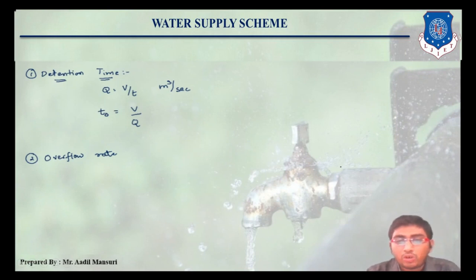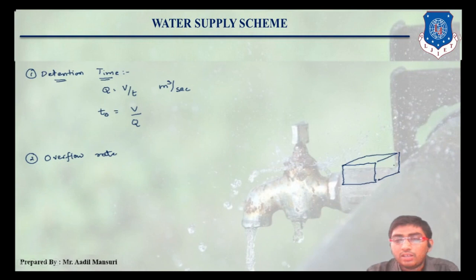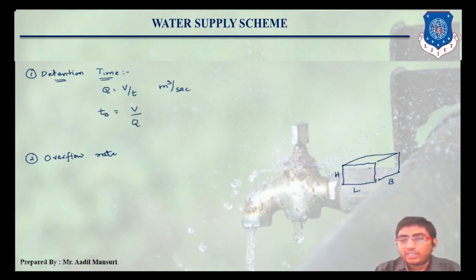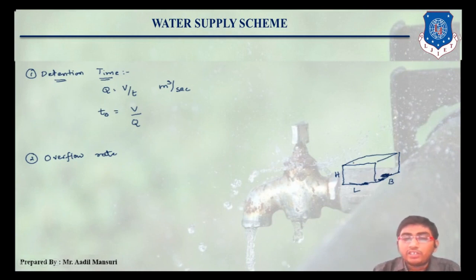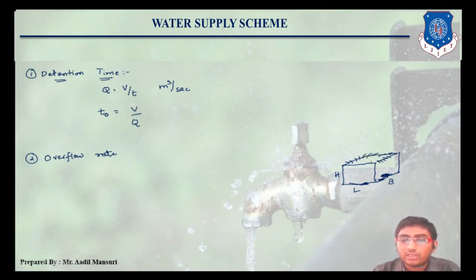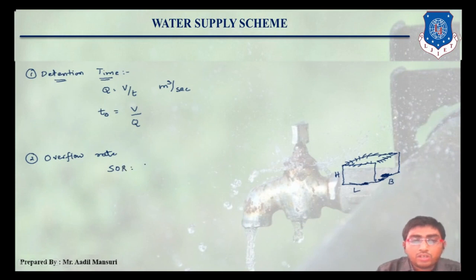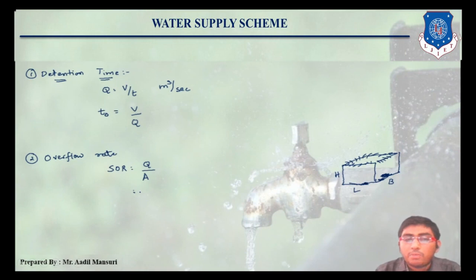In the phenomenon of sedimentation, suppose this is a sedimentation tank having length L, height H, and width B. What happens is, water is filled in the sedimentation tank — all the sediments will be deposited at the bottom of the tank, and the clear water will be removed from the top. So, overflow rate, or surface overflow rate, is defined as the quantity of water passing through a particular plan area, that is Q upon length into width.